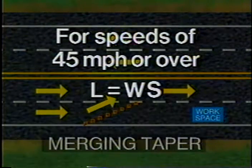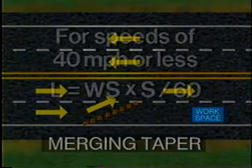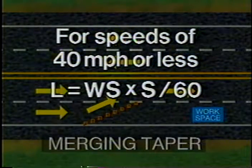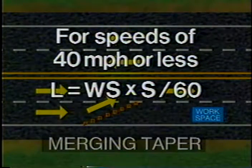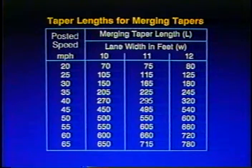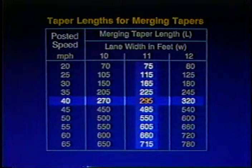For speeds of 45 miles per hour or greater, the merging taper length should be at least the width of the lane multiplied by the posted speed or the observed operating speed. For speeds of 40 miles per hour or less, the length of the taper should be at least the product of the width of the lane times the posted speed times the posted speed divided by 60. This is the high speed taper multiplied by the factor of the posted speed divided by 60. Most state and local manuals include tables showing the required taper lengths for various speeds and lane widths. For example, a 40 mile per hour posted speed and an 11 foot lane requires a 295 foot merging taper.